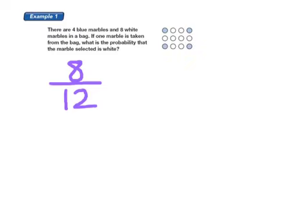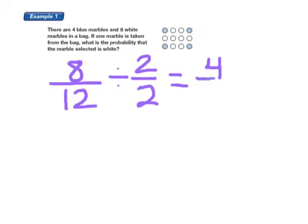Now this can be reduced. I know that both eight and twelve are even, so they can both be divisible by two. So I'm going to start by reducing by two halves. I divide my numerators. Eight divided by two equals four. And divide my denominators. Twelve divided by two equals six. So I can reduce eight twelfths to four sixths.